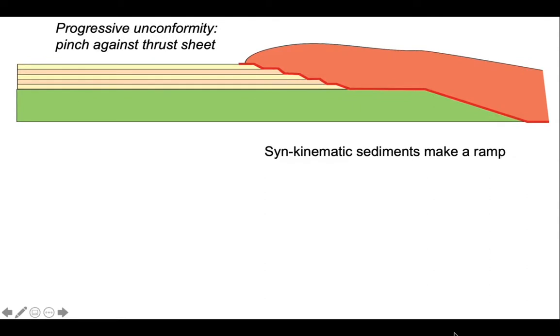So the thrust also acts as an unconformity to limit the lateral extent of the syn-kinematic sediments. Collectively, these make a ramp structure up which the thrust climbs.